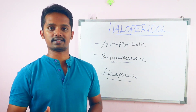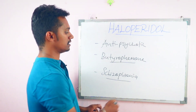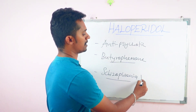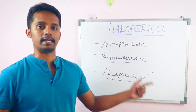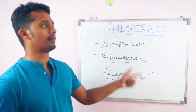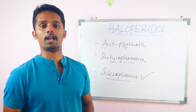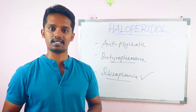If you understand this first — how schizophrenia develops — then you can easily understand how haloperidol works to reduce it.